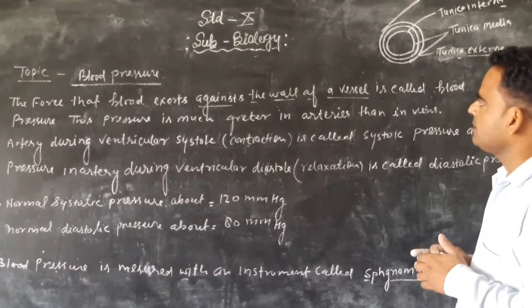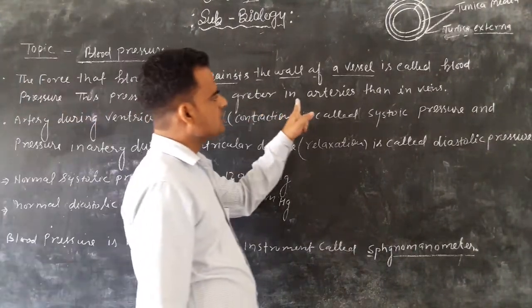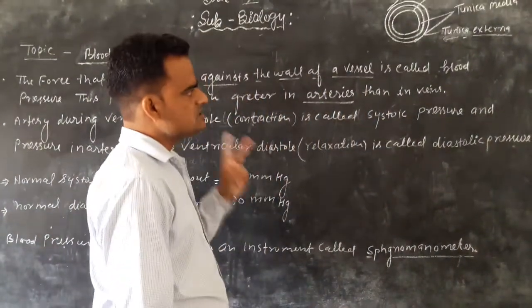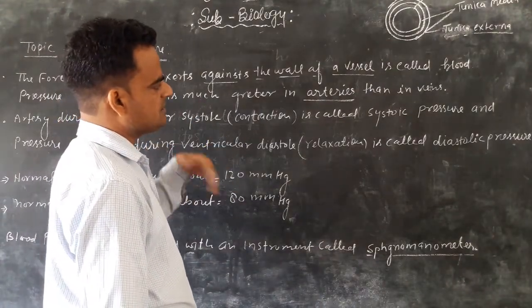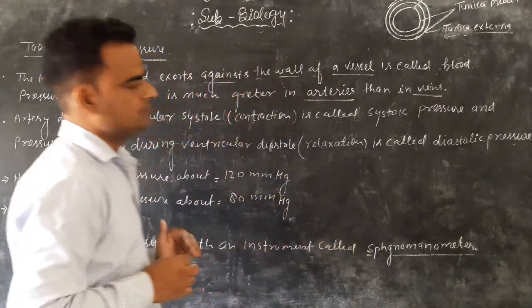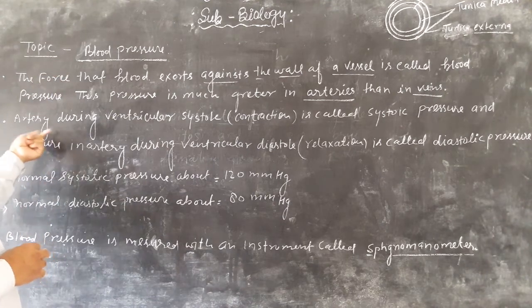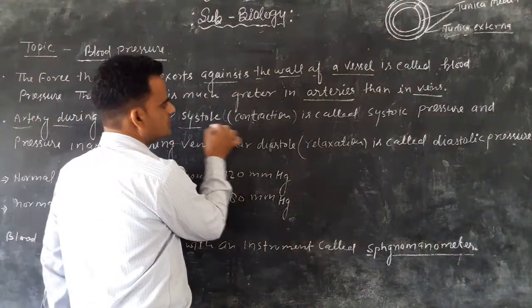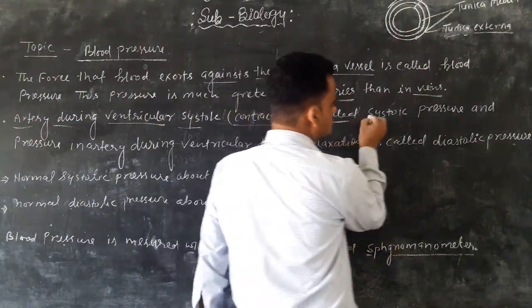Blood pressure is the pressure of the vessels, which is much greater in the arteries. The pressure of the blood in the arteries is called blood pressure. Blood pressure in the artery during ventricular systole — that contraction — is called systolic pressure.